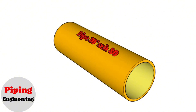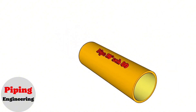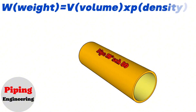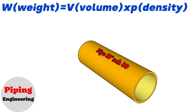Let's start our education video. The formula for finding the weight of the pipe is as follows: Weight equals volume multiplied by the density of the material of the pipe. In this formula, the density of the material is taken from the density chart of the materials. We have to calculate the volume ourselves.